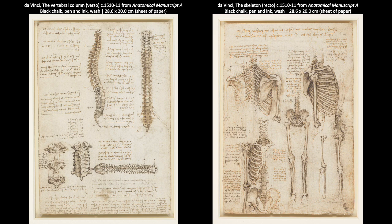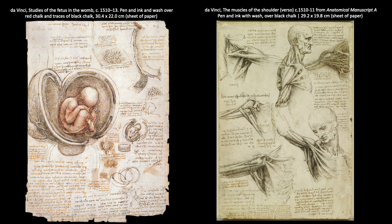Da Vinci's most revolutionary drawings depict human anatomy. He had no medical training but performed dissections to learn about the workings of the human body, far in advance of any medical professionals of his day. By the end of his life, he claimed to have dissected over 30 corpses. In the winter of 1510–11, probably in collaboration with a young anatomy professor, he compiled 18 mostly double-sided sheets with more than 240 individual drawings and over 13,000 words of notes. Da Vinci was the first to depict the human spine accurately.